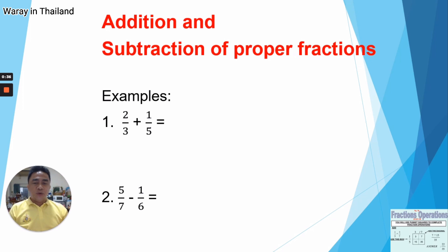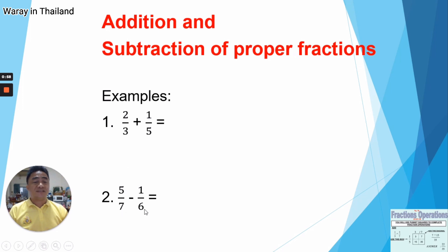We have here examples of proper fractions that we're going to add or subtract. We know that proper fractions are fractions where the numerator is smaller than the denominator. You can see here we have 2 over 3, 1 over 5, 5 over 7, and 1 over 6. So these are all proper fractions.